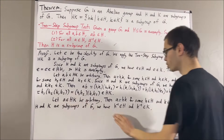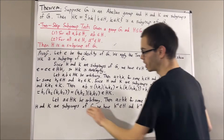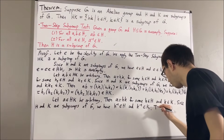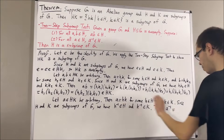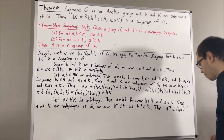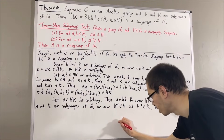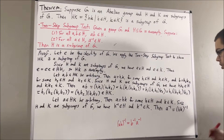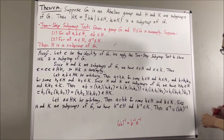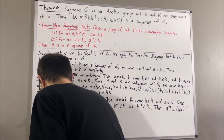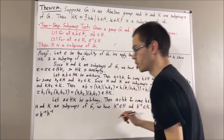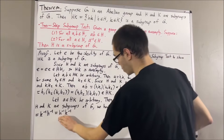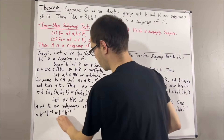The claim is that the inverse of a is equal to the inverse of h times the inverse of k. Since a is equal to hk, the inverse of a must be the inverse of hk. In general, the inverse of a times b is equal to the inverse of b times the inverse of a. So, the inverse of hk must be equal to the inverse of k times the inverse of h. But g is abelian, so any pair of elements commute, and we can swap these two to get the inverse of h times the inverse of k. This fits the form to be an element of hk.